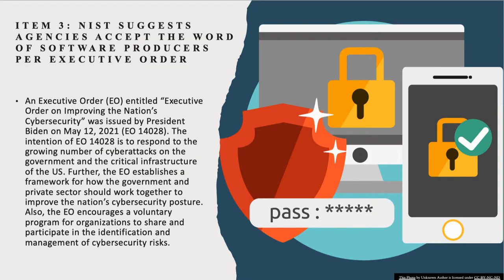Item three — fairly recent. Executive Order 14028, 'The Executive Order on Improving the Nation's Cybersecurity,' was issued by President Biden on May 12th, 2021. The intention is to respond to the growing number of cyber attacks on organizations, U.S. critical infrastructure, and the defense industrial base. The EO establishes a framework for how government and the private sector should work together to improve the nation's cybersecurity posture — it's almost like a strategy, setting policies and procedures forward and a strategic goal for the government to build a framework.